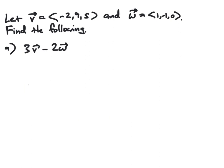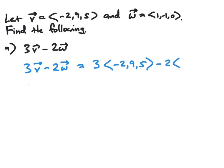First, we find the vector 3V minus 2W. In order to do this, we first apply scalar multiplication to each vector, and then subtract the resulting vectors. So in component form, that would be 3 times the vector V, and we want to subtract from that 2 times W, or 2 times the vector W.